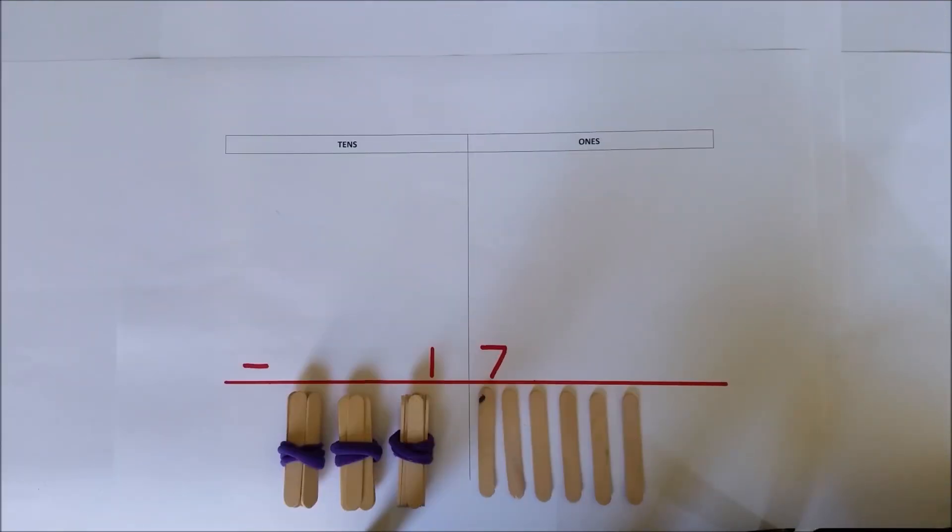So 53 take away 17, and the answer is 36. Three tens and six ones.